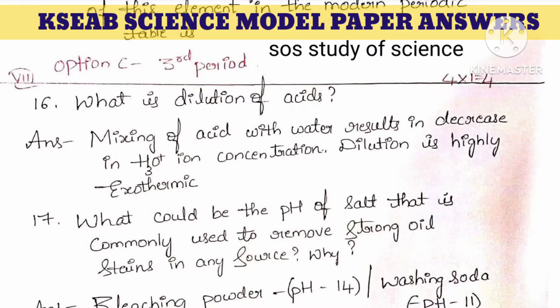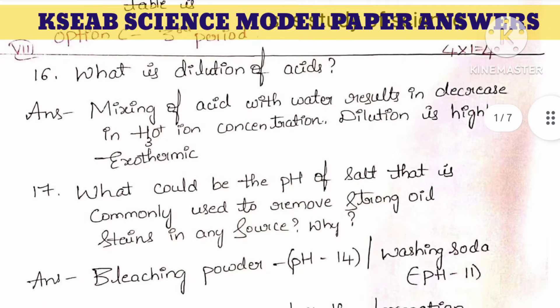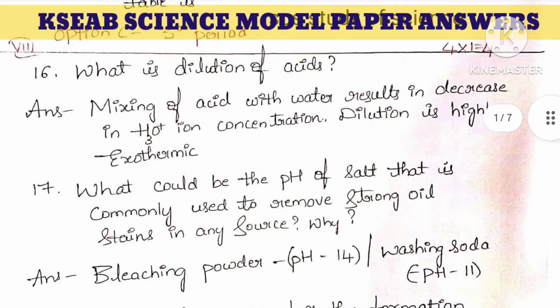What is dilution of acids? The answer is: mixing of acid with water results in a decrease in hydronium ion concentration. Dilution is a highly exothermic reaction. This is the answer you have to write for dilution of acids.